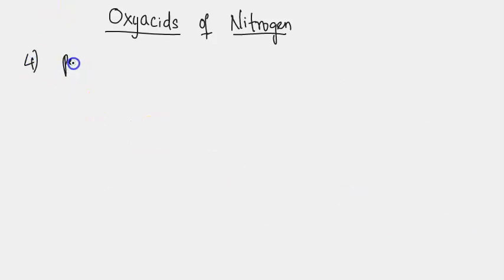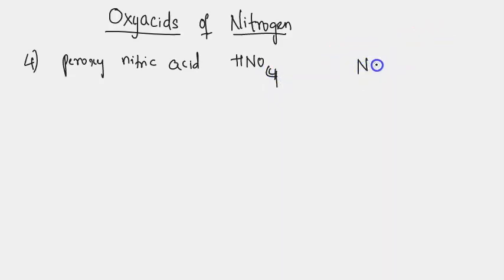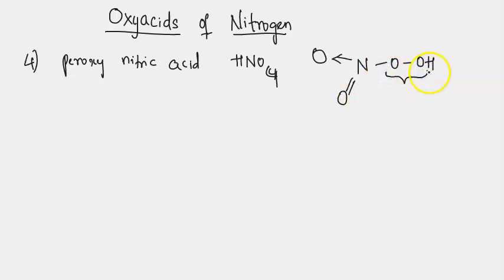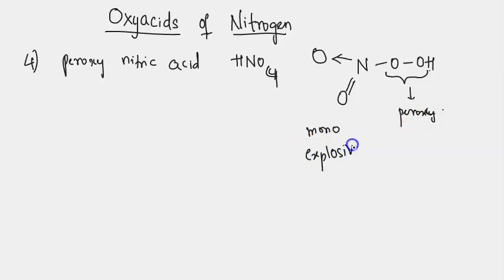The fourth compound is peroxynitric acid with the formula HNO4. The central nitrogen is connected to an oxygen which is connected to OH, another oxygen by a coordinate covalent bond, and one more oxygen by a double bond. There is an oxygen-oxygen (peroxy) linkage present, which is the extra feature compared to nitric acid — hence the name peroxynitric acid. This molecule is also a monobasic acid, and it is said to be an explosive compound.